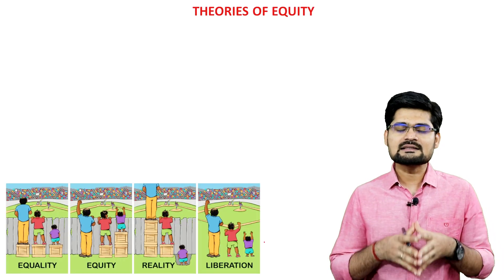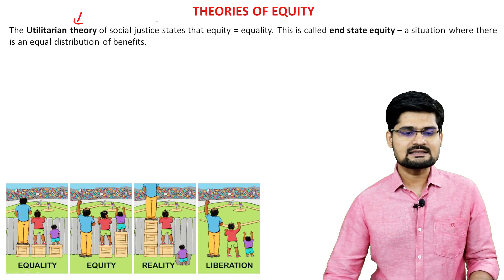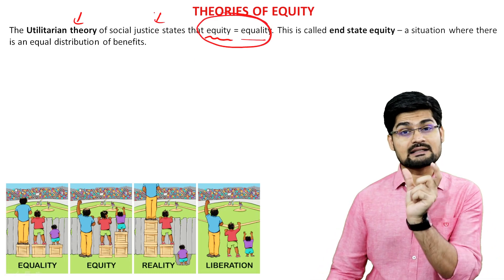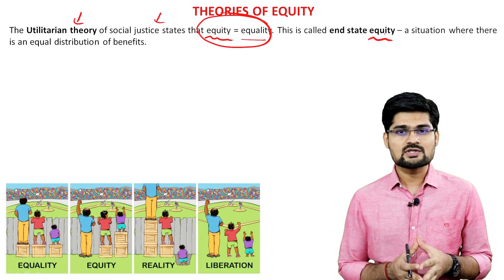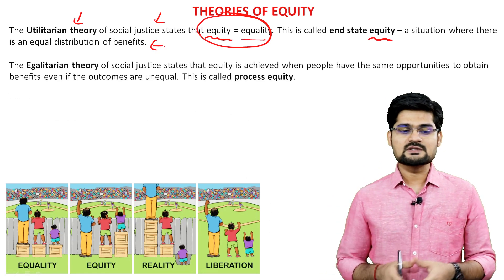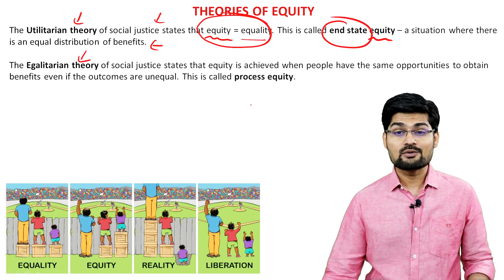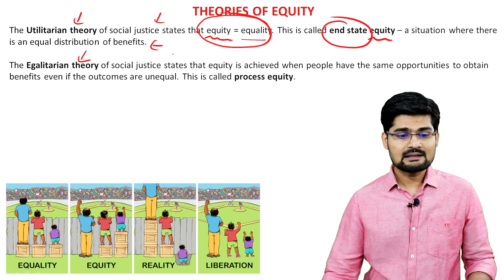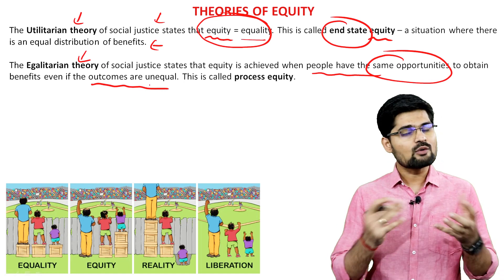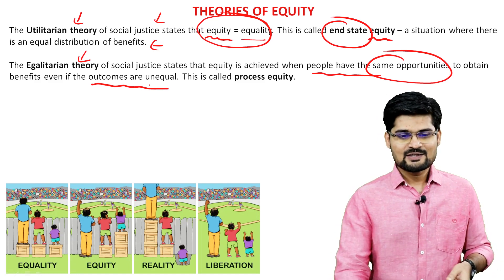There are certain theories of equity. The first is the utilitarian theory of equity — a social justice theory that states equality and equity is equal, where the end state is a situation where everyone gets an equal amount, equal share, and equal benefit sharing. There is also the egalitarian theory of equity, which is a little different — it doesn't talk about end state but about the process. It is achieved when people have the same opportunities to obtain resources, even if the outcomes are unequal. This makes society more egalitarian.